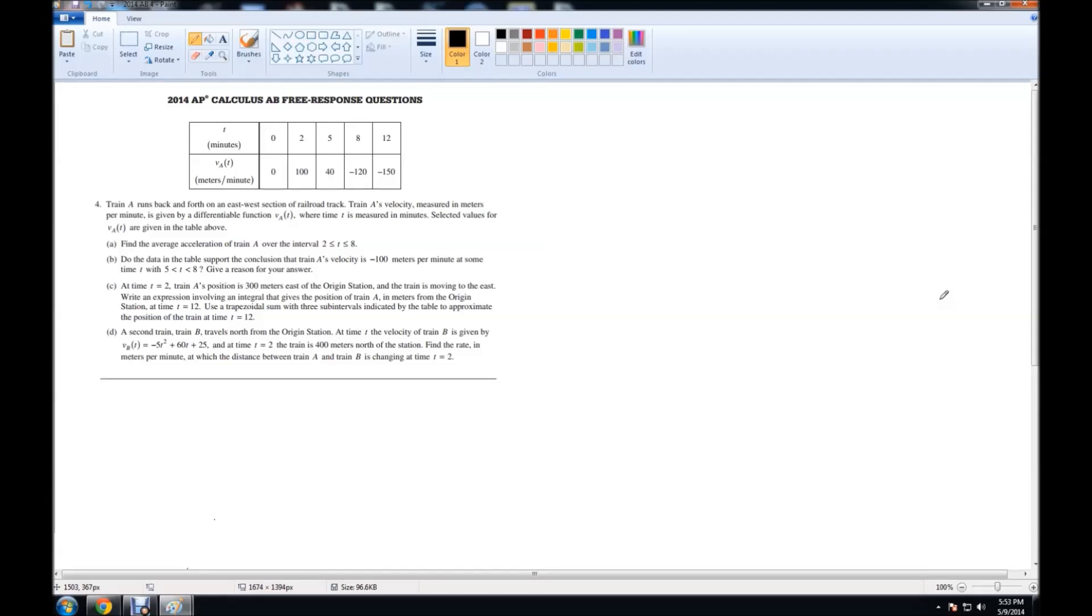Part A asks: find the average acceleration of train A over the interval 2 is less than or equal to T is less than or equal to 8. If you remember, acceleration is the derivative of velocity, and the derivative is also known as the slope. So if we take the average slope of the velocity equation from 2 to 8, we should get the answer to part A.